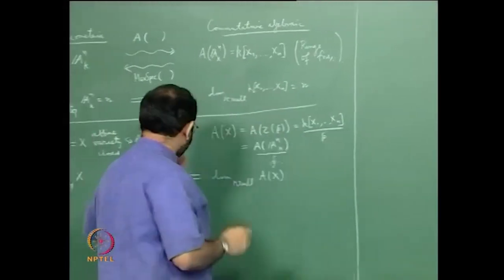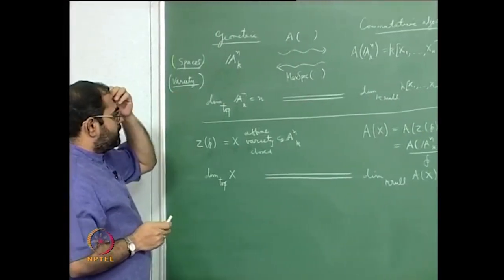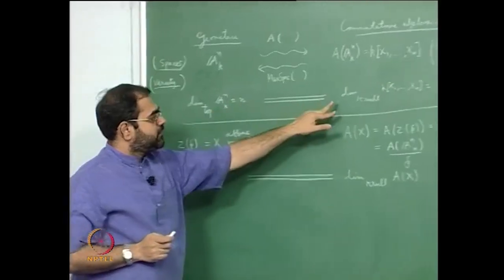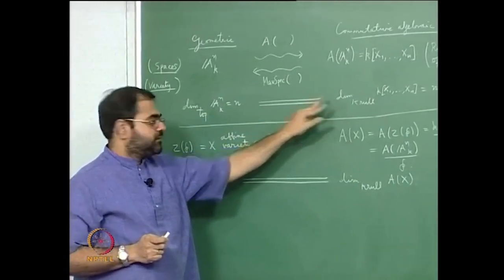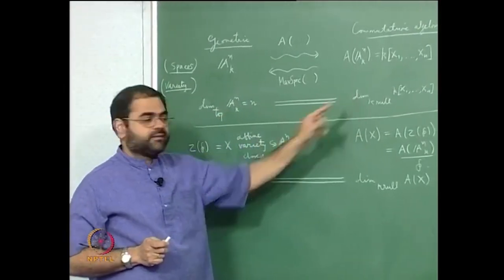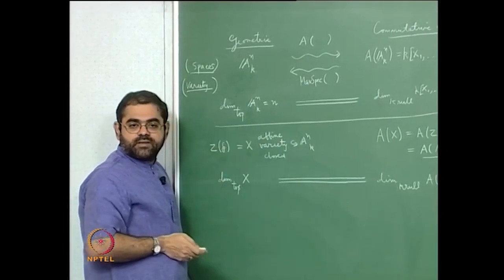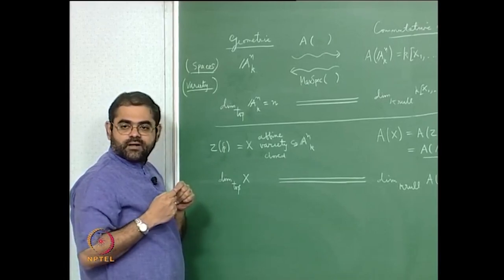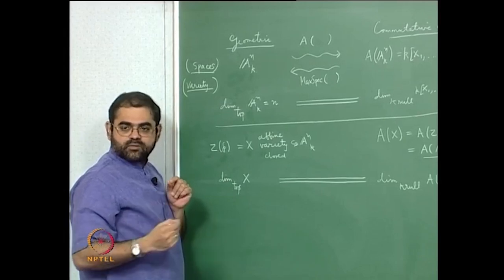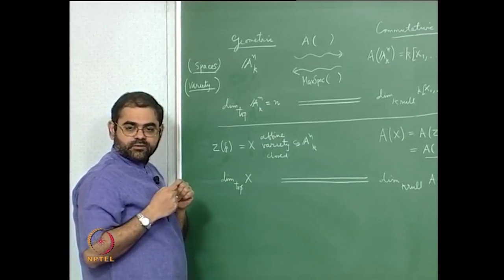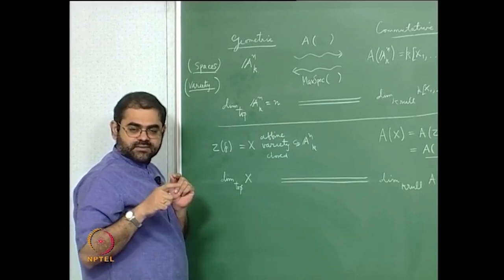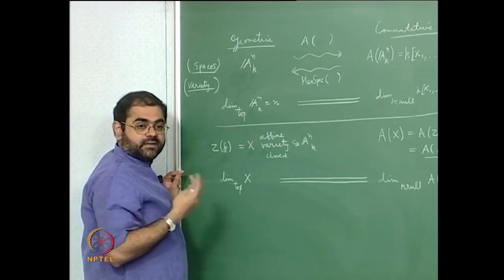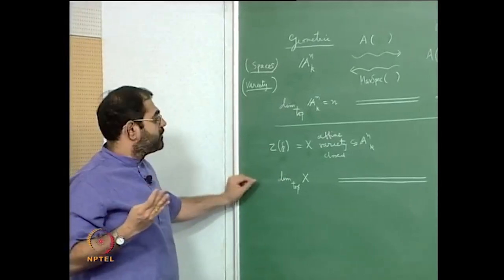Let me explain and expand upon this diagram. The first thing I want to explain is how we get that the topological dimension equals the Krull dimension — the topological dimension of A^n equals the Krull dimension of the polynomial ring — because the topological dimension is computed by taking strictly increasing chains of irreducible closed subsets and taking the largest possible such chain and subtracting one.